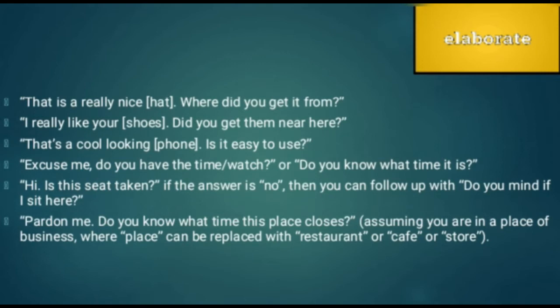Moving on — let's elaborate and see how many phrases we can have for elaboration. If you see a person and you like their hat, watch, phone, or bag, you can appreciate any of them: 'Hey, that's a really nice hat — where did you get it?' or 'I really like your shoes — did you get them near here?' or 'That's a cool-looking phone — is it easy to use?' You can also say: 'Excuse me, do you have the time?' — meaning watch. And: 'Is this seat taken? Do you mind if I sit here?'